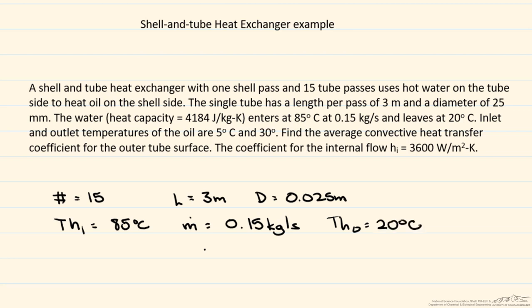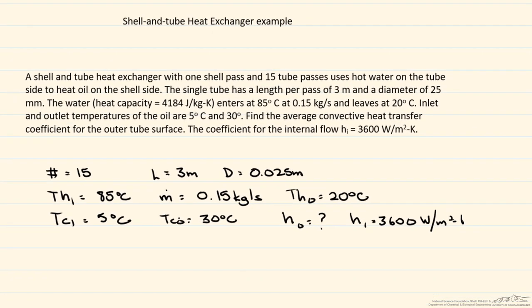So we have our cold inlet temperature, which is the oil, which is five degrees C, and the outlet temperature is 30 degrees C. And what we're looking for is the average convective heat transfer coefficient for the outer tube surface. And what we're given is this inner heat transfer coefficient of 3,600 watts per meter squared K.